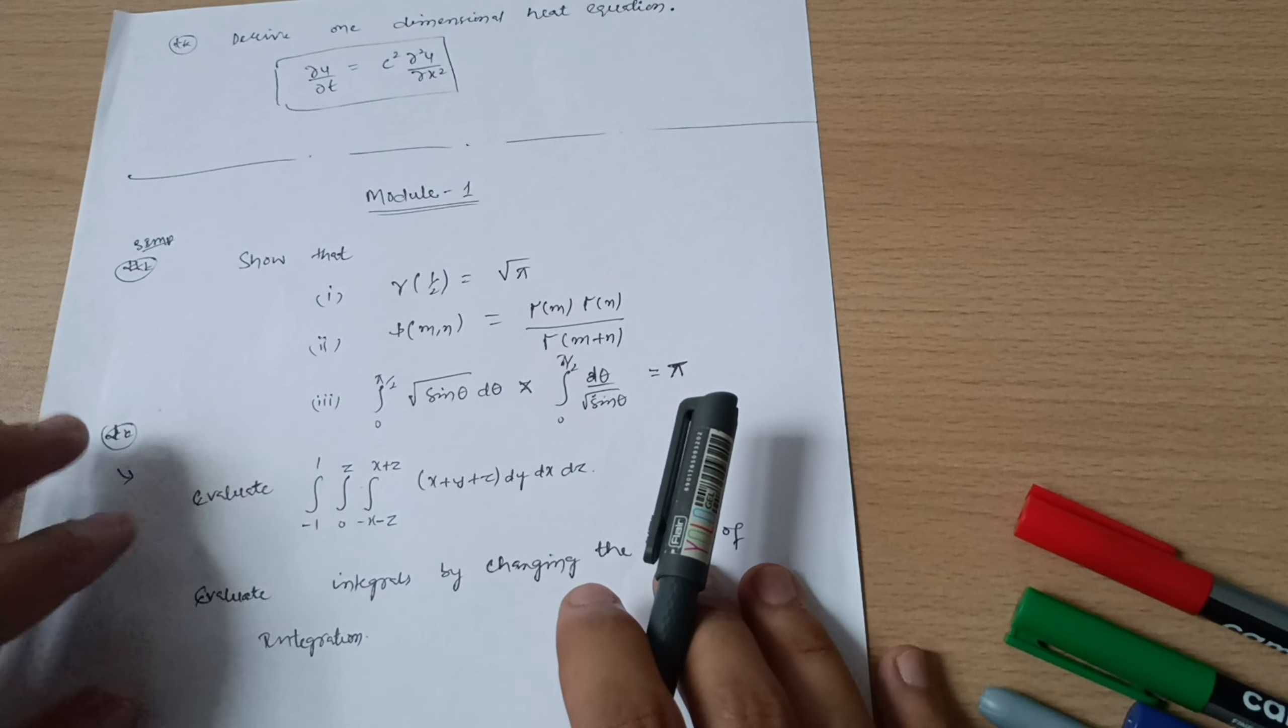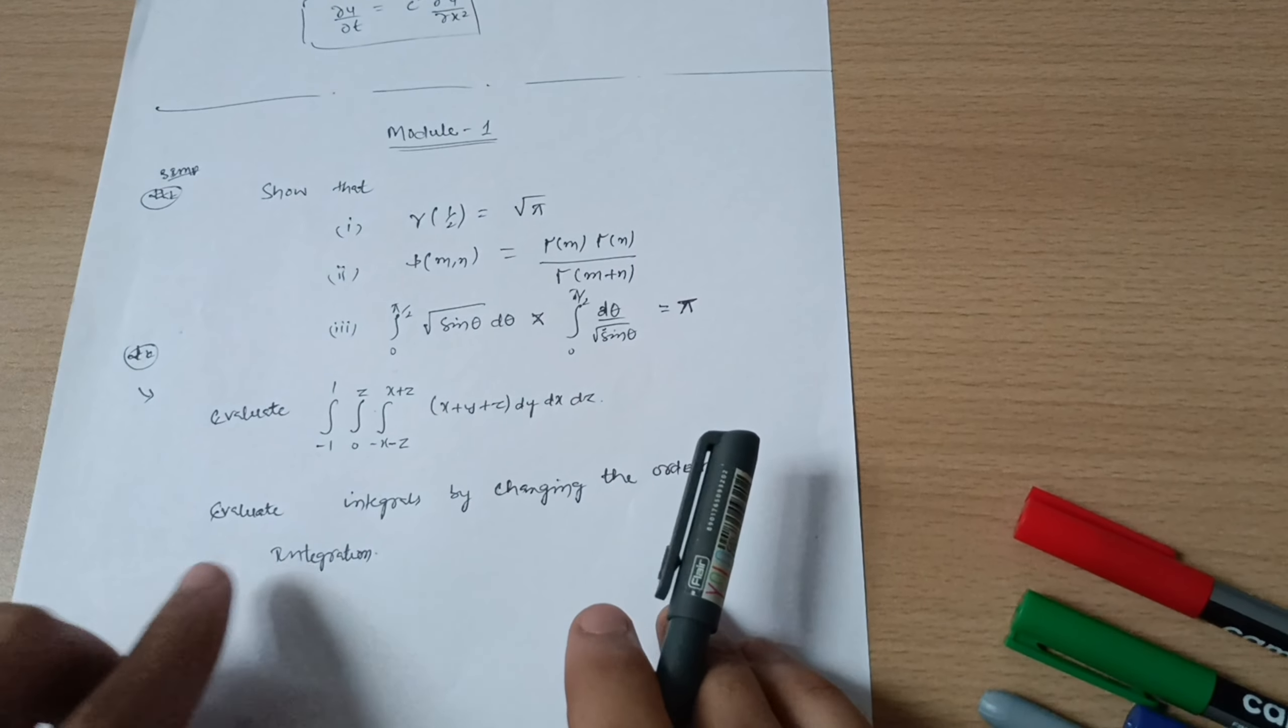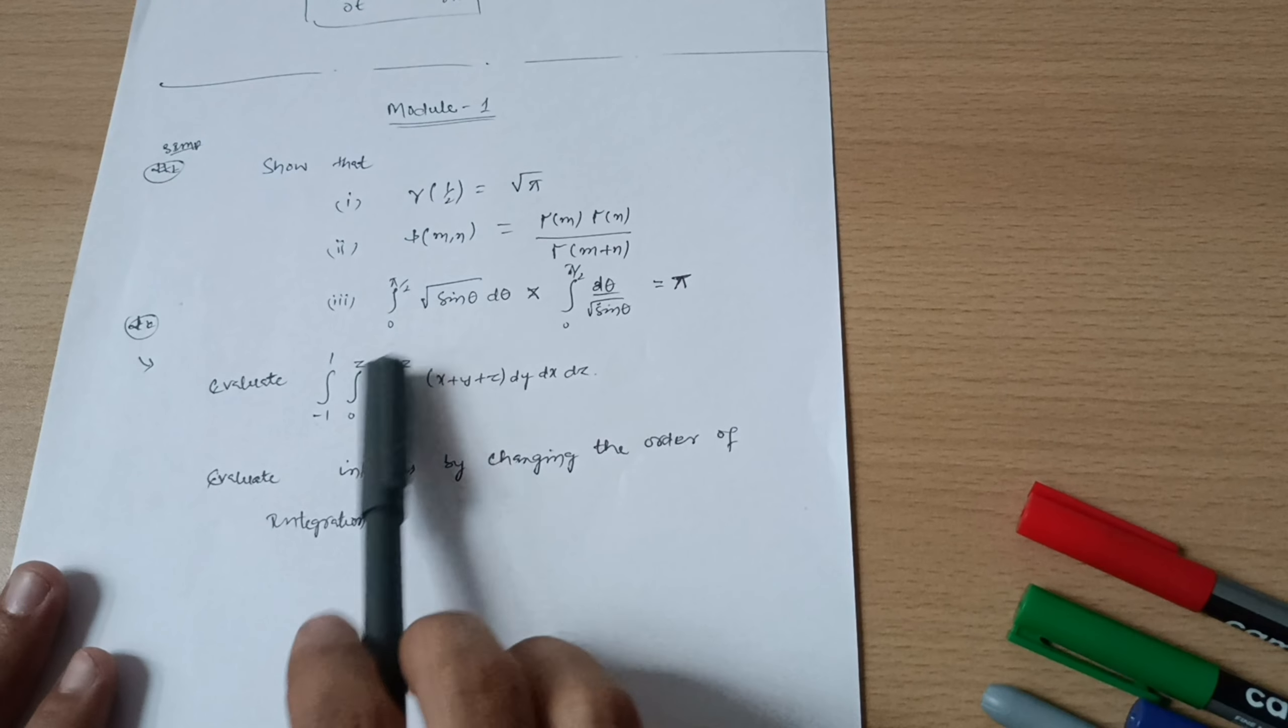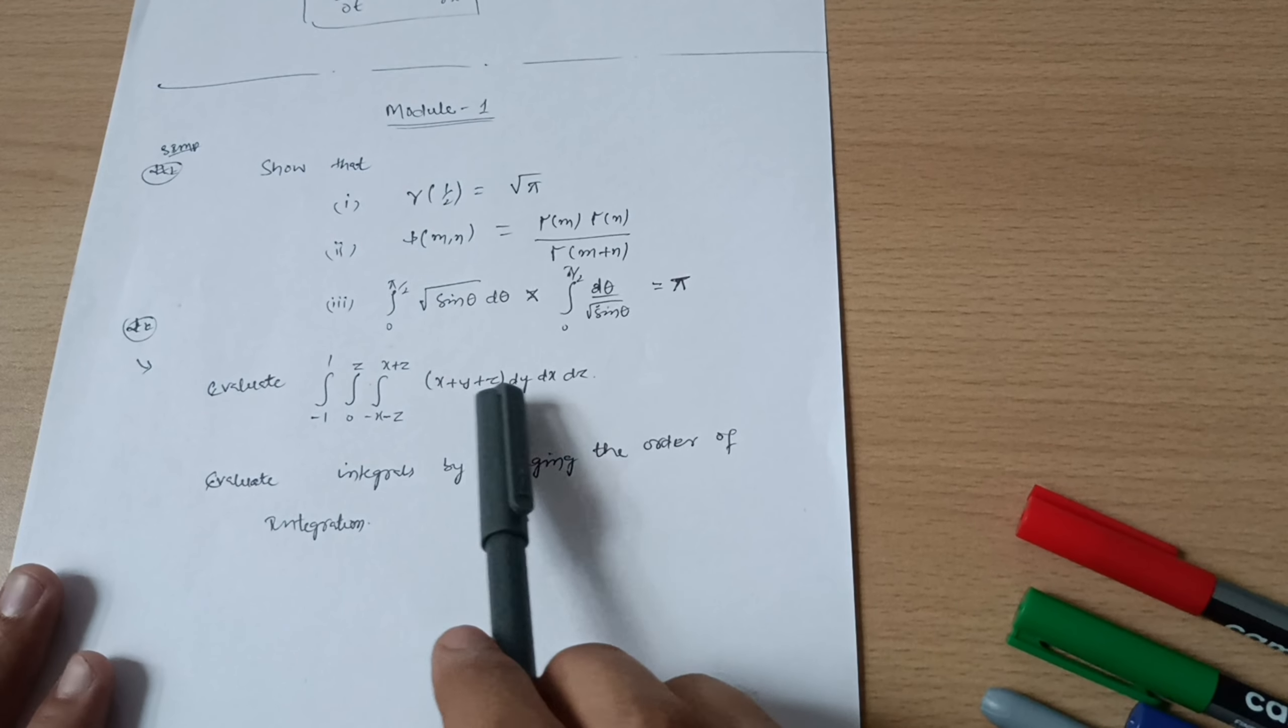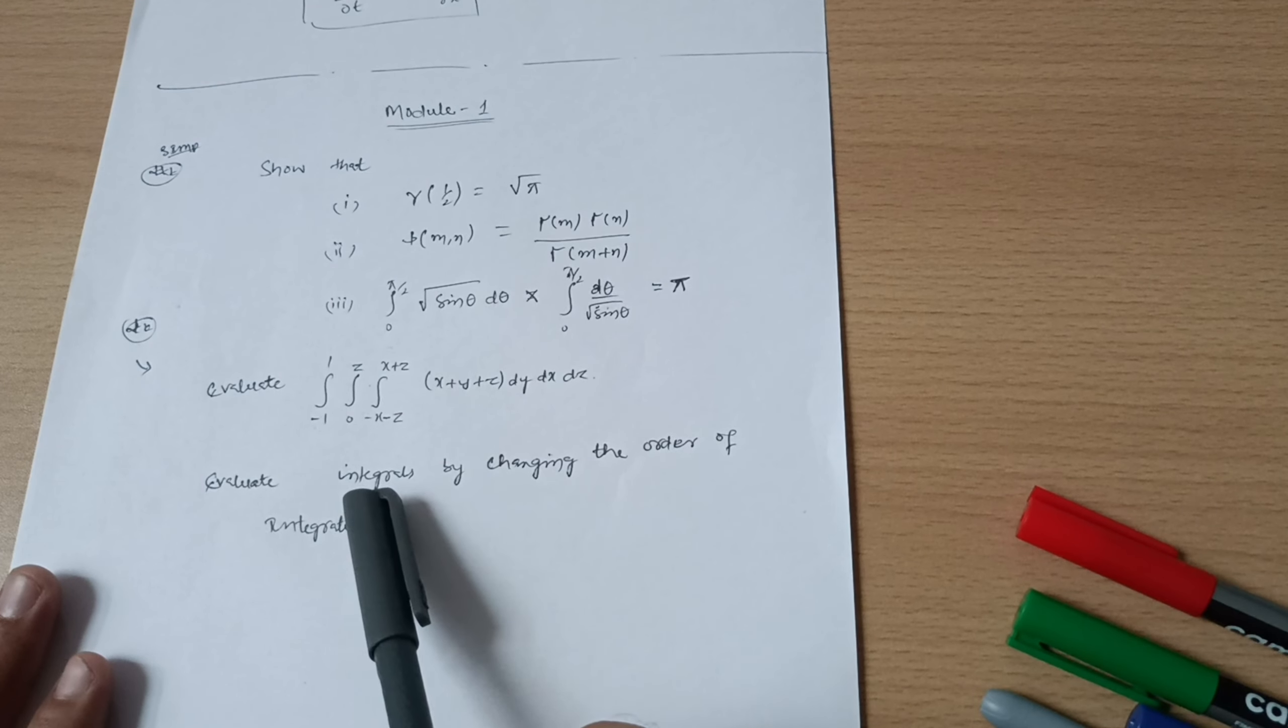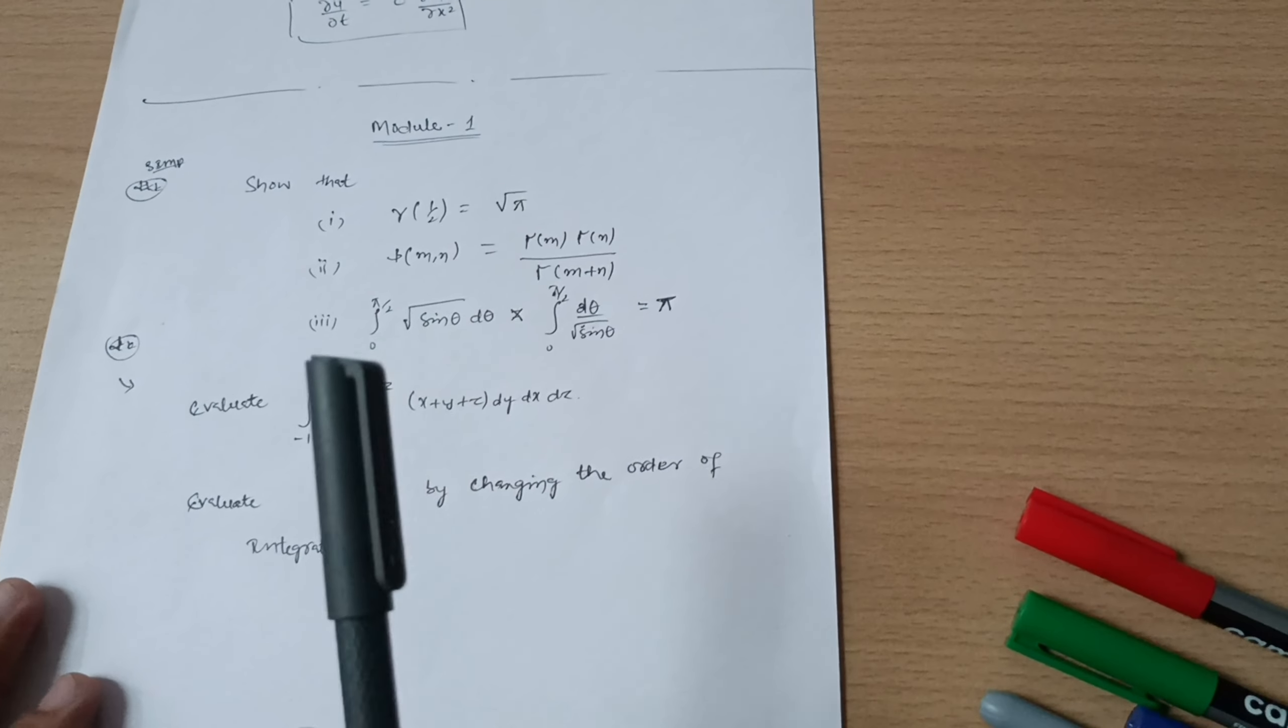If you want to score in mathematics, you have to go through the integration part, which is triple integration and changing the order of integration. Questions will be like: evaluate triple integrals where these intervals and limits are given, x plus y plus z dy dz dx. Evaluate integrals by changing the order of integration. If you cover this much portion, you will easily pass.